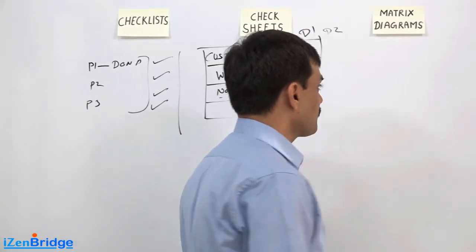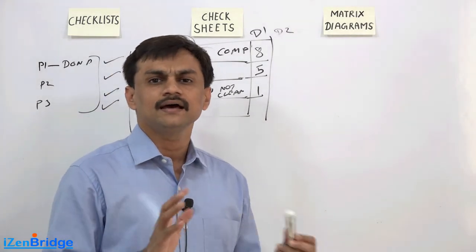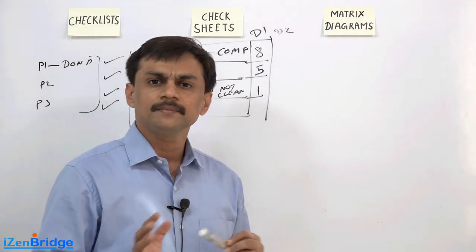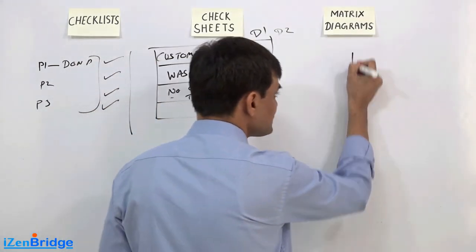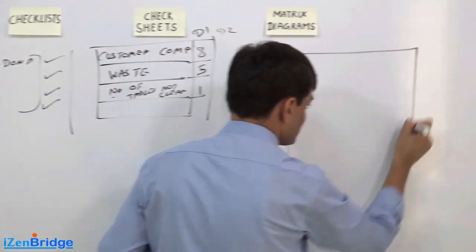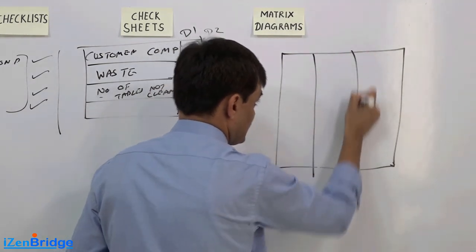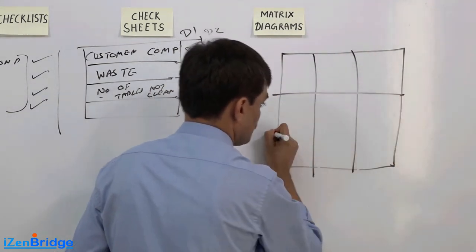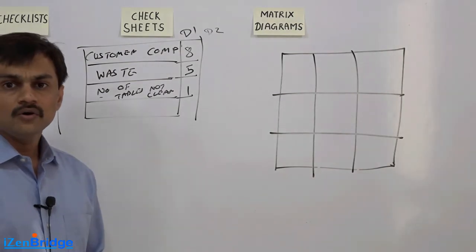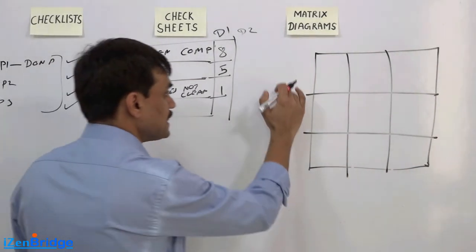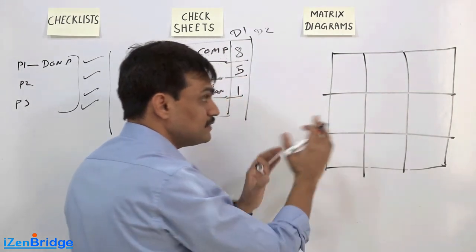Matrix diagram. Matrix diagrams are primarily used to see the relationship among two or more variables. A matrix simply has rows and it has columns. You may have some variables along one axis and some along the other, and you see how they relate with each other.